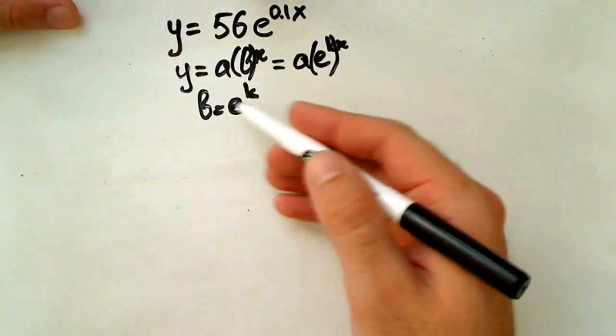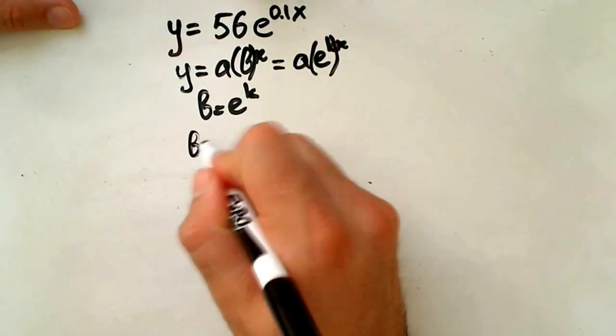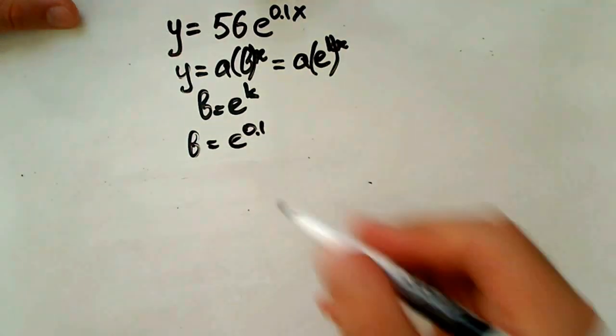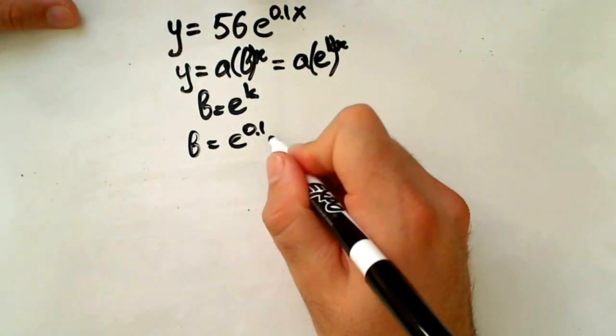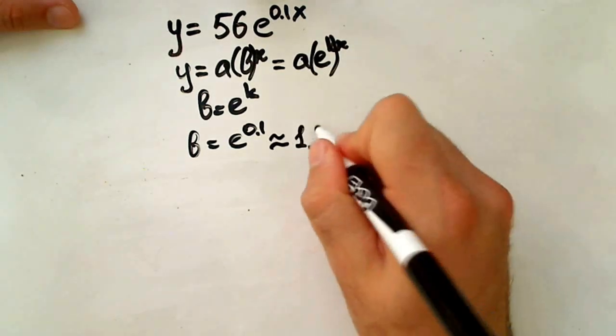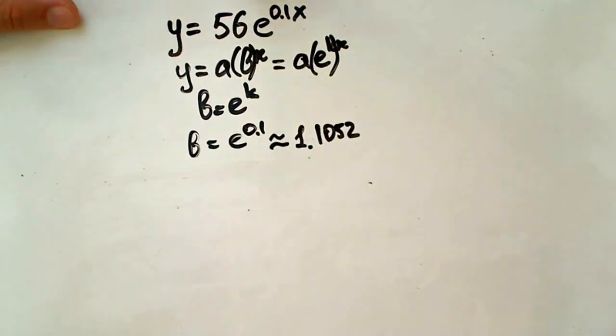Now, what do we have to do to find b? Our b equals from our function e to the 0.1 which is exact but we need an approximation number. It will be actually 1.1052, a four decimal approximation.